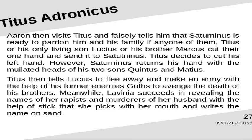Titus decides to cut his own left hand. However, Saturninus returns his hand along with the mutilated heads of his two sons Quintus and Martius. Titus then tells Lucius to flee and make an army with the help of his former enemies, the Goths, to avenge the deaths of his brothers. Meanwhile, Lavinia succeeds in revealing the names of her rapists and the murderers of her husband, using a stick that she picks with her mouth to write the names in the sand.